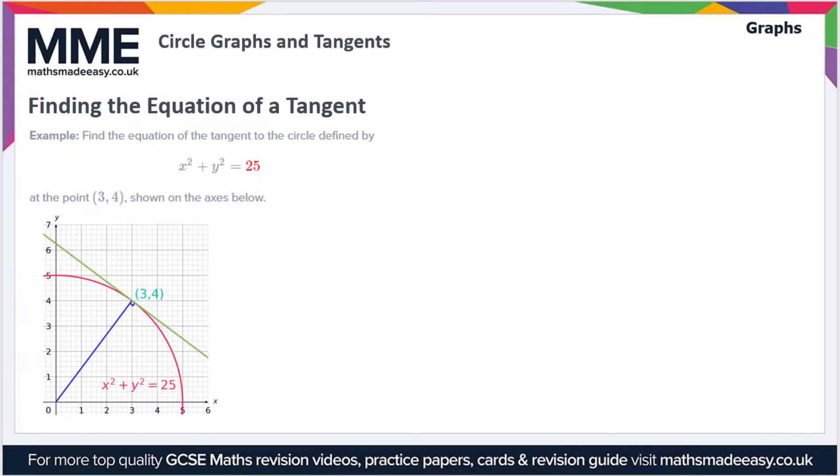Now let's look at finding the equation of a tangent to the circle. In this example we have to find the equation of the tangent to the circle defined by x squared plus y squared equals 25 at the point three four, as shown on the axes below.